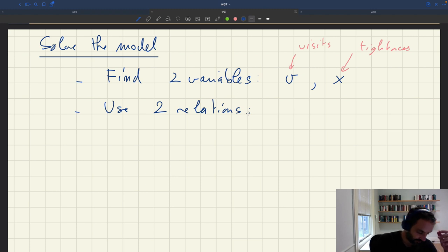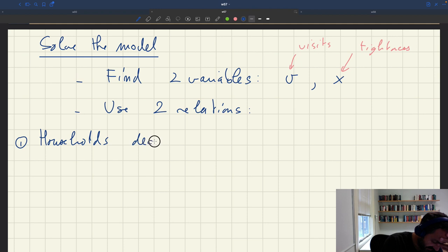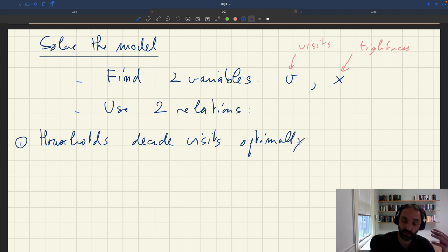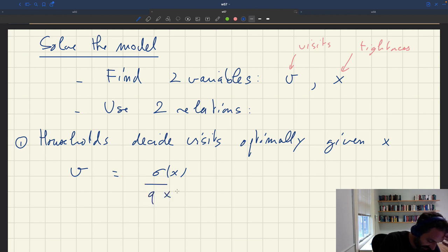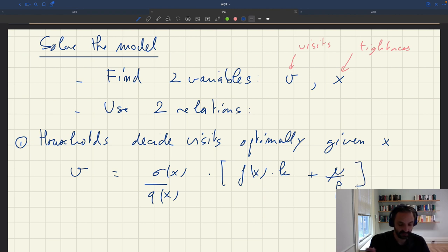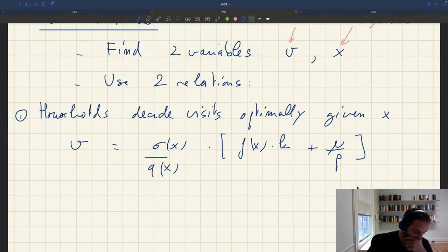First, households decide visits optimally, meaning they maximize their utility subject to budget constraint given X, given the tightness. So we saw that this means the number of visits V is just sigma X, the marginal propensity to spend per visit, times Q(X), the buying probability, times F(X)K, the aggregate income of the household, plus mu over P, the amount of real wealth. This is something that we determined earlier.